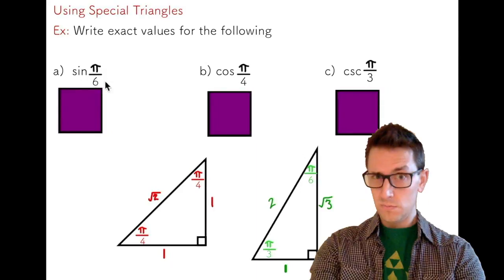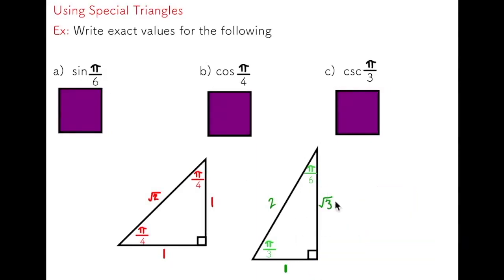I've got sine pi over 6 here. I'm going to grab the special triangle that has pi over 6. I'm going to take a look at that pi over 6 angle, and I'm using sine, which we know is the opposite over the hypotenuse. In this case, the opposite would be 1. The hypotenuse is 2, and I can say that the sine of pi over 6 is 1 over 2.